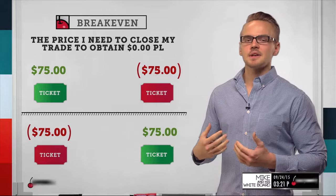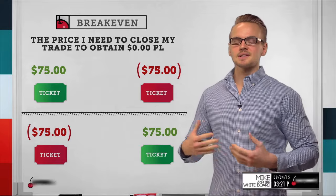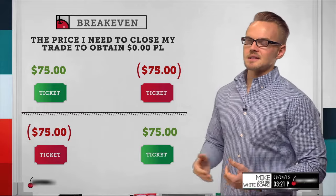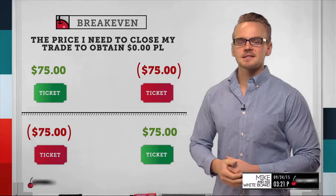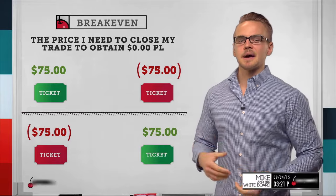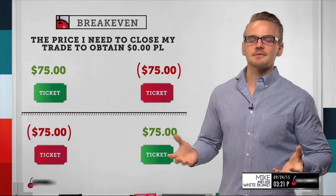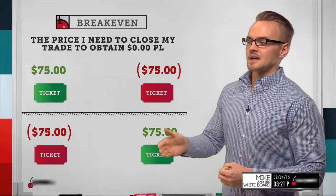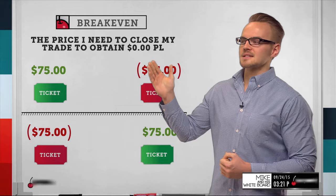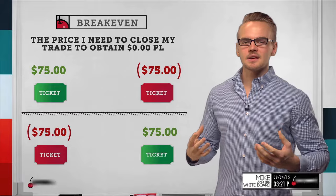In the options world, we don't have to buy something to sell it — we can do the opposite. We can sell something to open and buy it to close. So we can sell naked options, sell spreads. If I'm selling a ticket for $75 to a friend and they can't go anymore, maybe I'll buy it back for the same price and break even at $75, obtaining that $0 P&L. So let's take a look at some options trades and how we can calculate this mathematically.